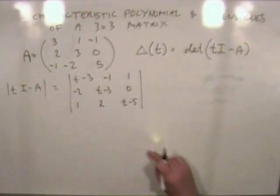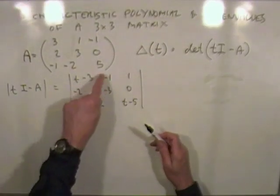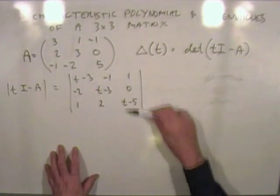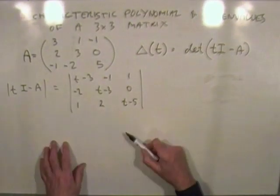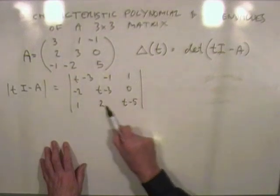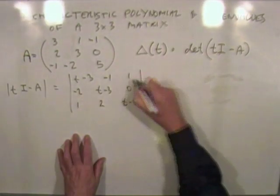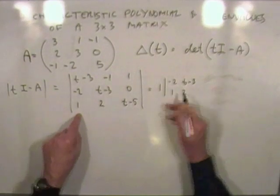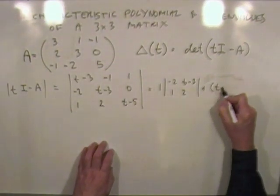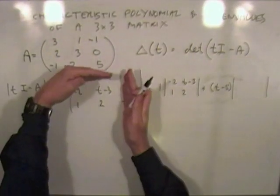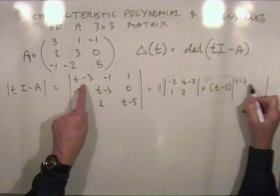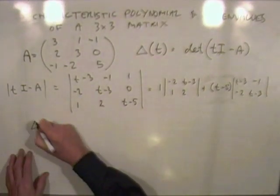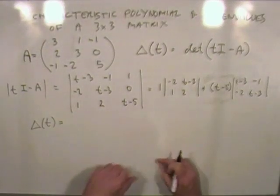To find the determinant of this three by three matrix, you could expand along the top row using each element times its minor, or look for a quicker row or column. There's a quick column available — it has just a one times its minor and t minus five. Watch the signs: plus, minus, plus. So that's one times its minor, giving negative two and t minus three, plus t minus five times its minor.